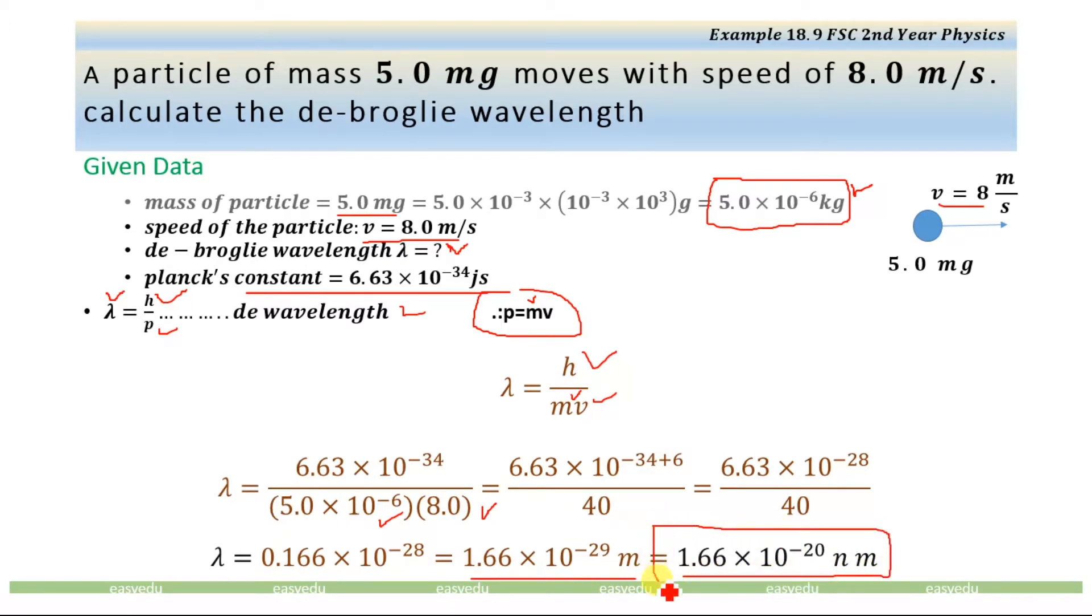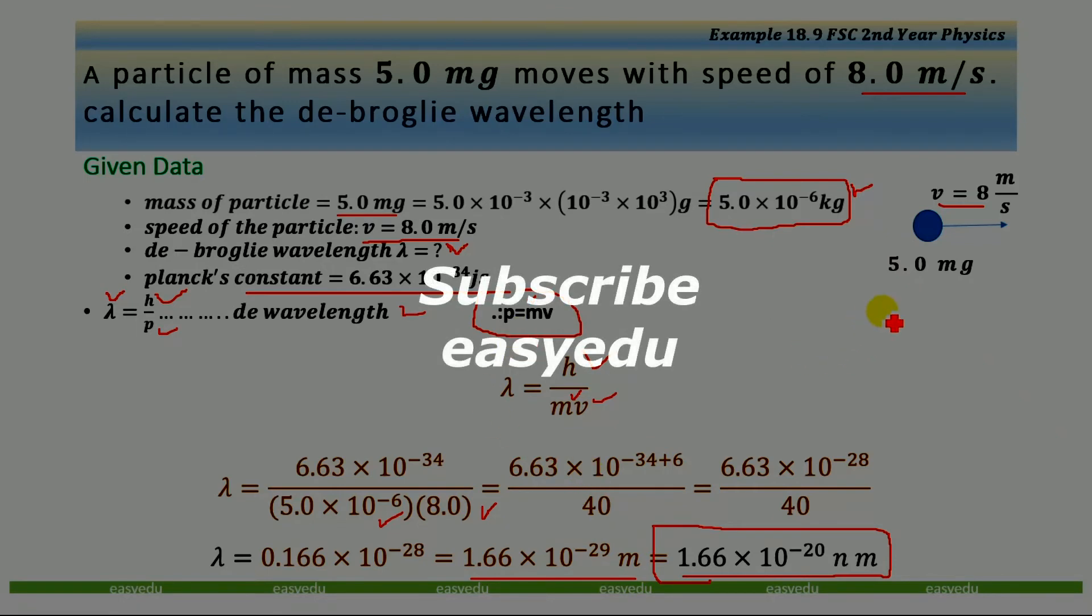And this will be the wavelength of the particle having mass of 5.0 milligram and that particle is moving with 8.0 meter per second. So this is the wavelength which we have calculated using the de Broglie equation.